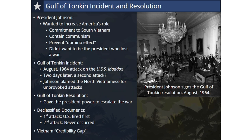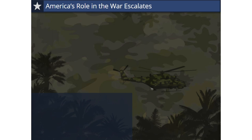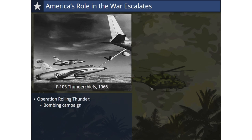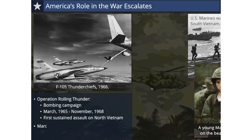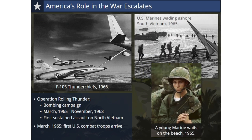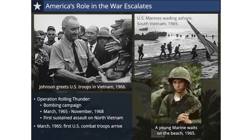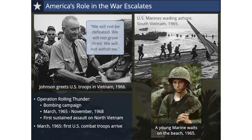In March 1965, Johnson initiated a strategic bombing campaign against North Vietnam called Operation Rolling Thunder. It would last until November 1968 and was the first sustained assault on North Vietnam, representing a major expansion of America's involvement in the war. Also in March, the first U.S. combat troops arrived in Vietnam. By the summer, American forces were engaged in search and destroy operations across the South. During this phase of the war, Johnson stated, 'We will not be defeated. We will not grow tired. We will not withdraw.'